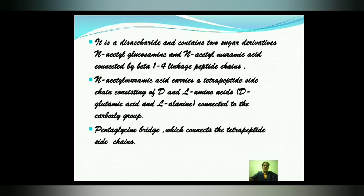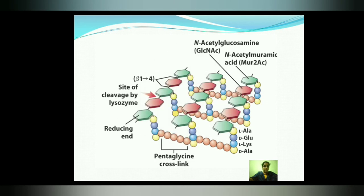The N-acetylmuramic acid carries a tetrapeptide side chain — tetra meaning four. The four amino acids are L-alanine, D-alanine, D-glutamide, and L-lysine, all present in the N-acetylmuramic acid. This is the structure of peptidoglycan for the Gram-positive cell wall.